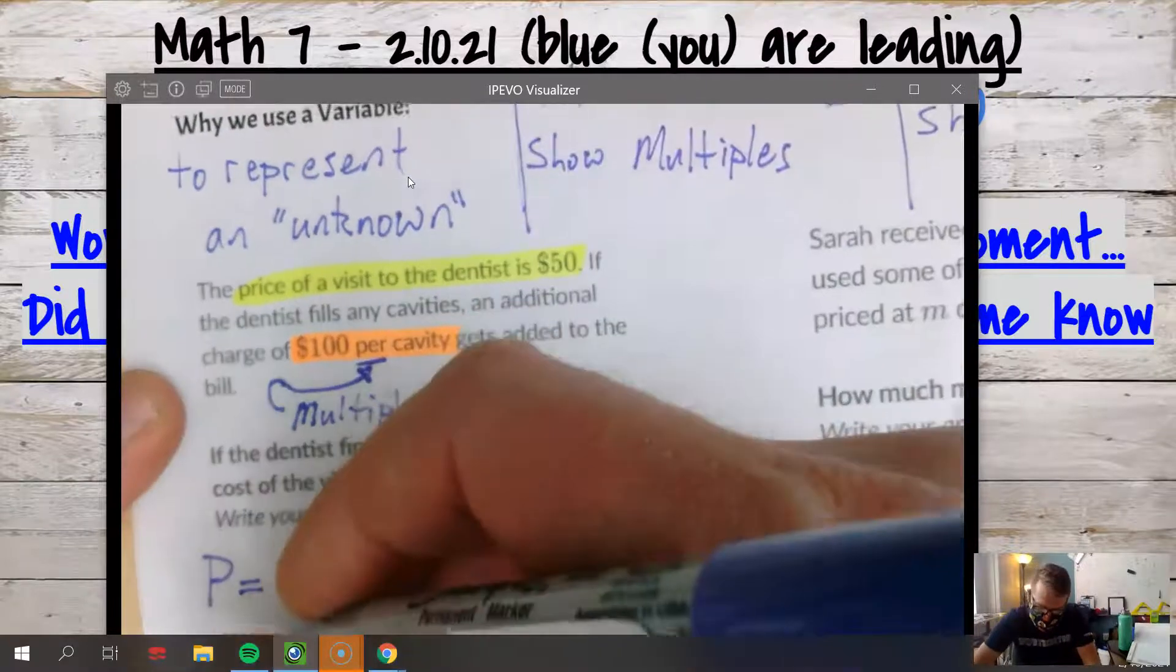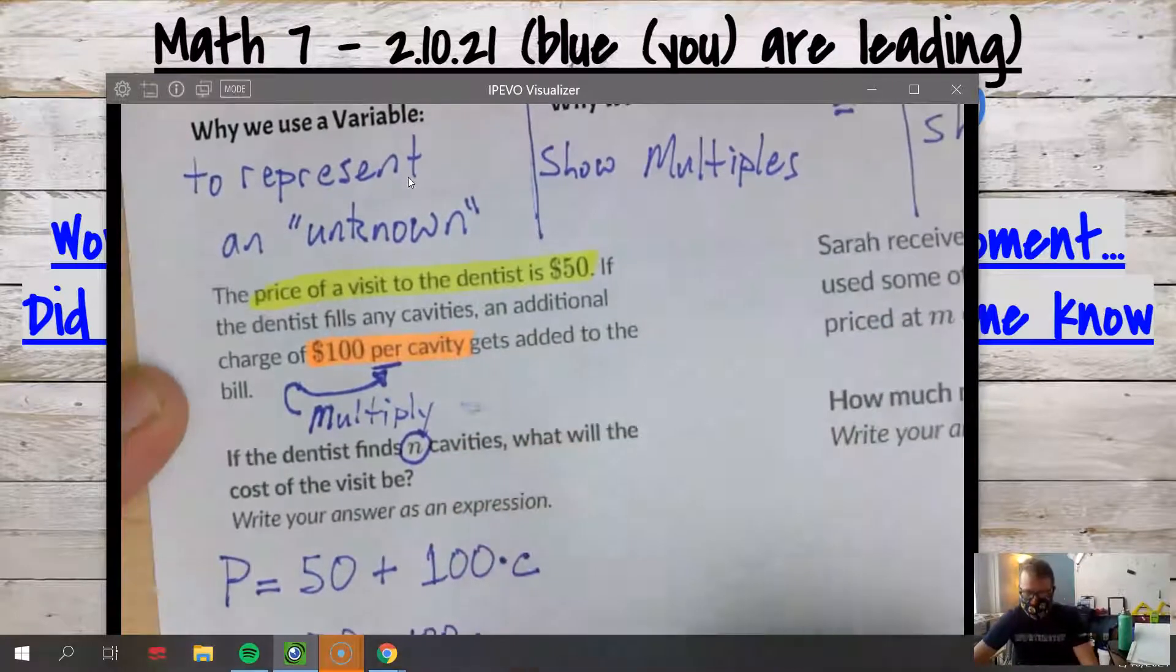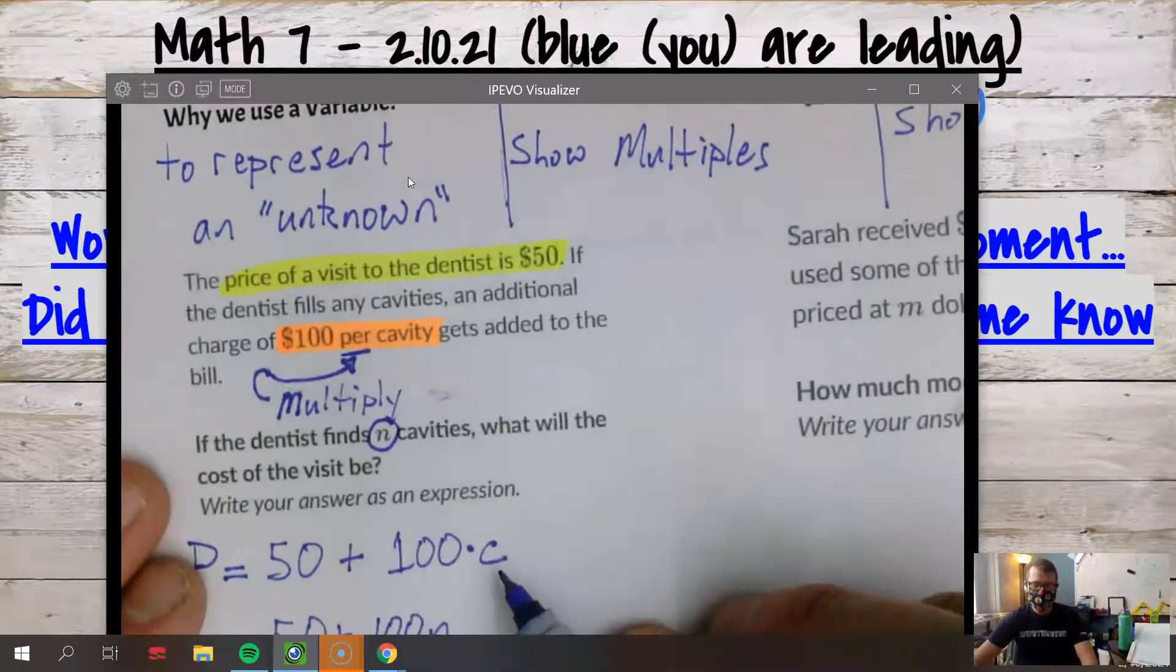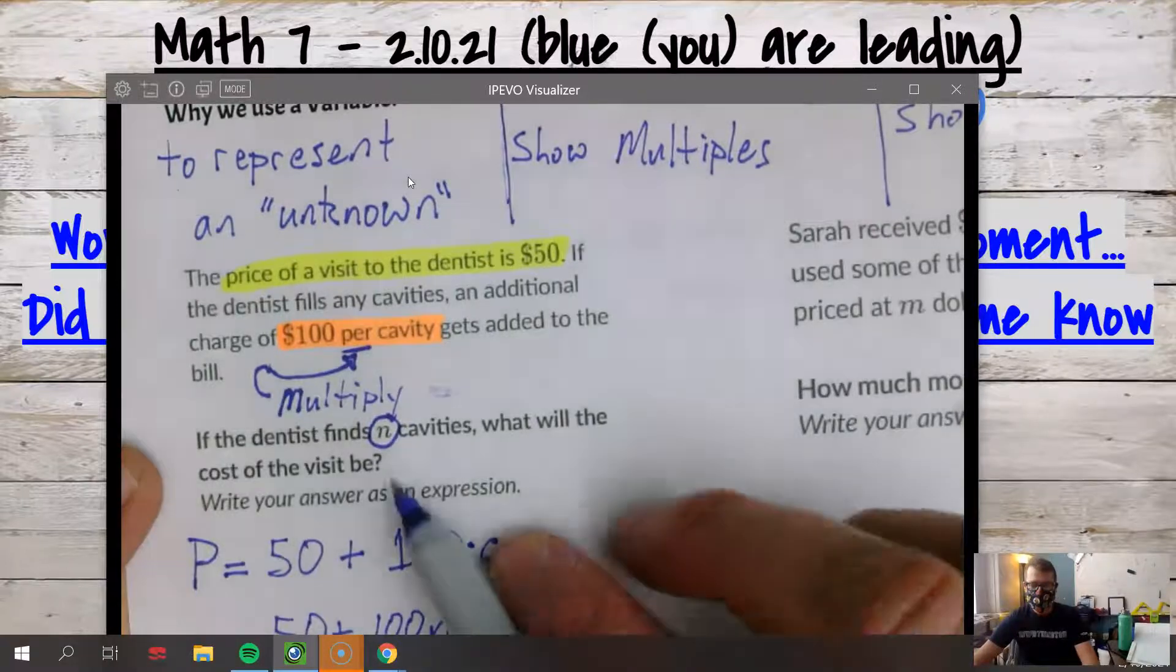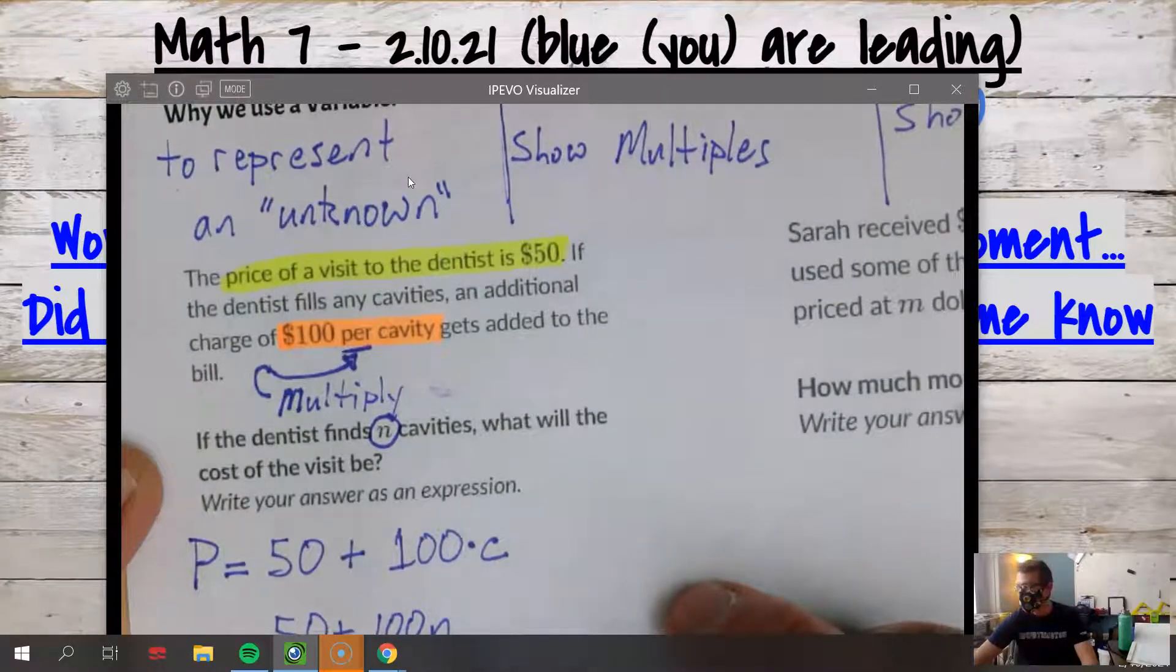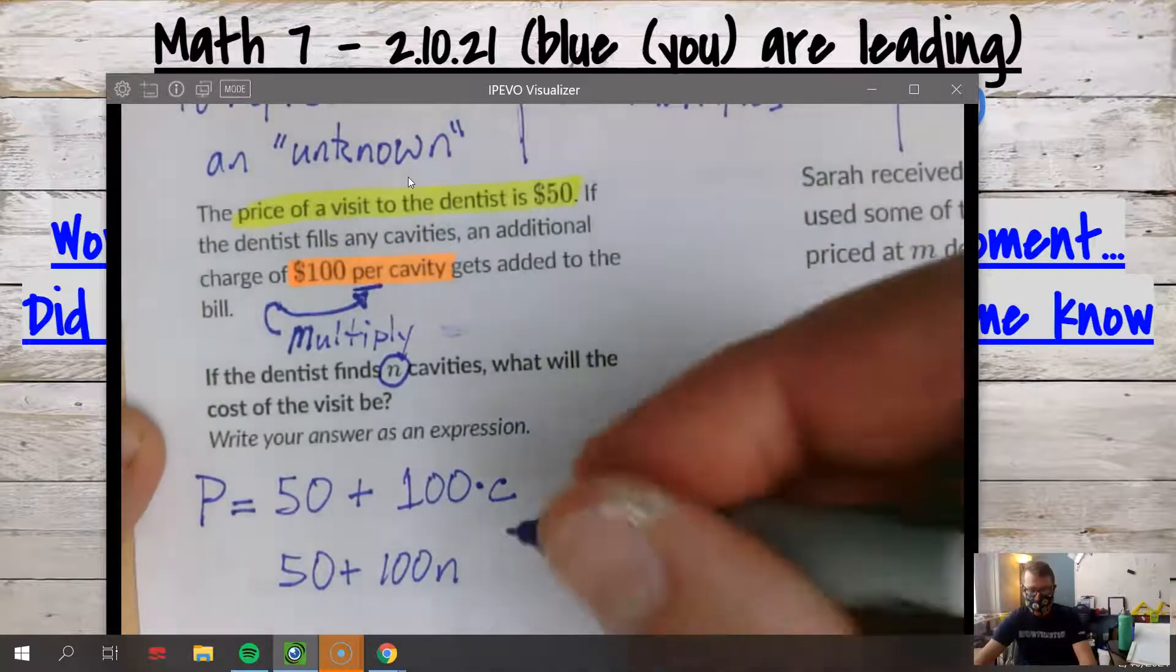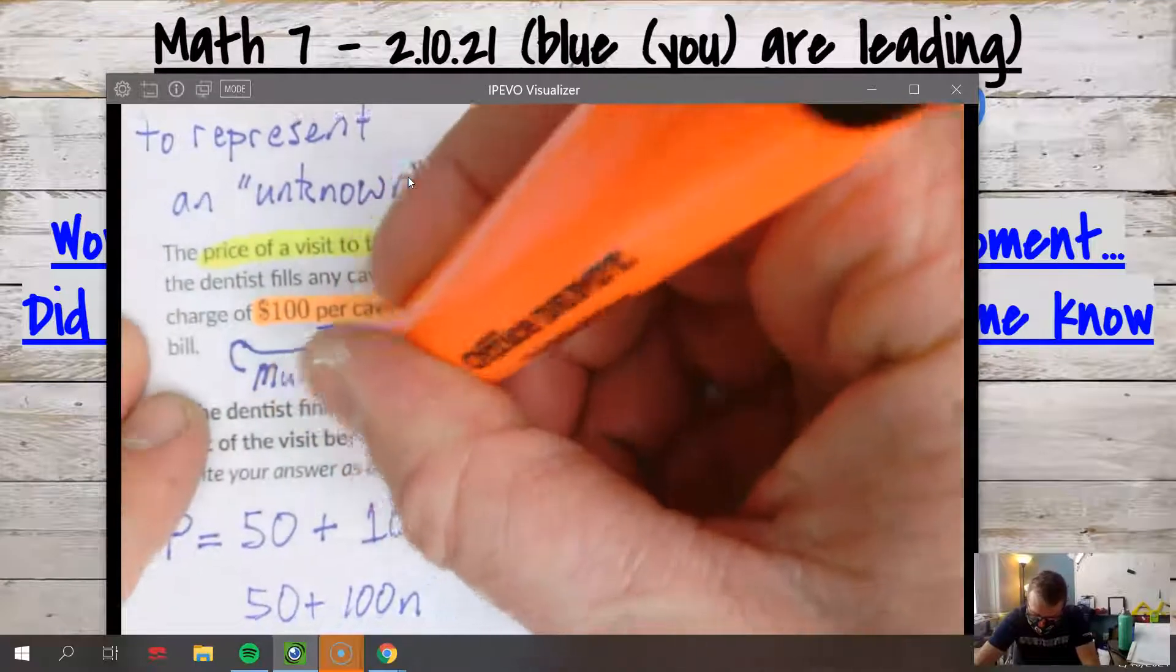Cavities are no fun, so take care of your teeth. But they take time to fix, right? So the dentist is going to charge you $100 per cavity. So the total cost that we will pay at the dentist - let's say the price, the price that we will pay - is, well, what's our price just to go see the dentist and like get a checkup? $50. That happens once. And then we get charged how much for each cavity? $100.